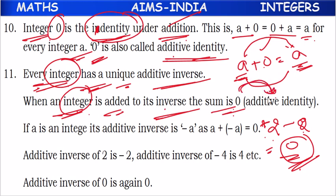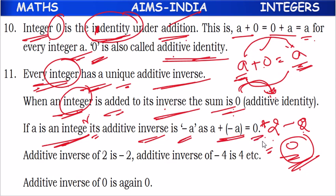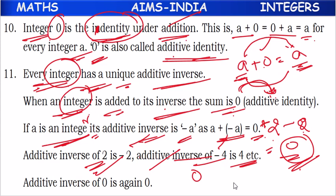The sum is 0, which is the additive identity. If a is an integer, its additive inverse is minus a, because a plus (minus a) equals 0. Additive inverse of 2 is minus 2. Additive inverse of minus 4 is plus 4. Additive inverse of 0 is 0 only, because 0 does not have any minus sign or plus sign.